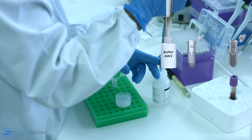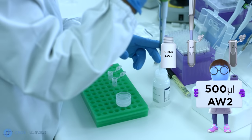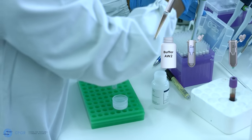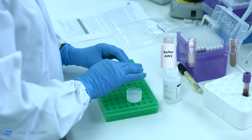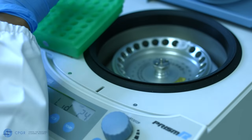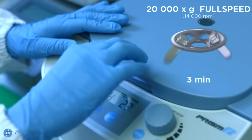Carefully open the lid and add 500 microliters of AW2 without wetting the rim of the spin columns. Close the cap and centrifuge at full speed, that's 20,000 g, around 14,000 rpm, for three minutes.